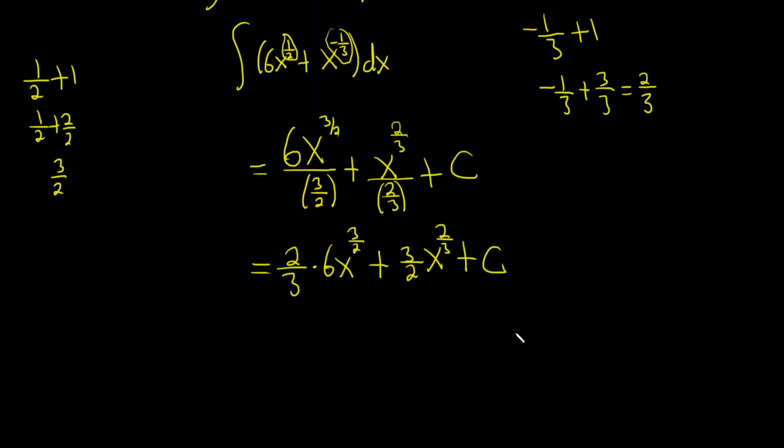We're almost done. Notice the 3 can go into the 6 twice, so 2 times 2 is 4. So this is 4x to the 3/2 plus 3/2 x to the 2/3 plus c.